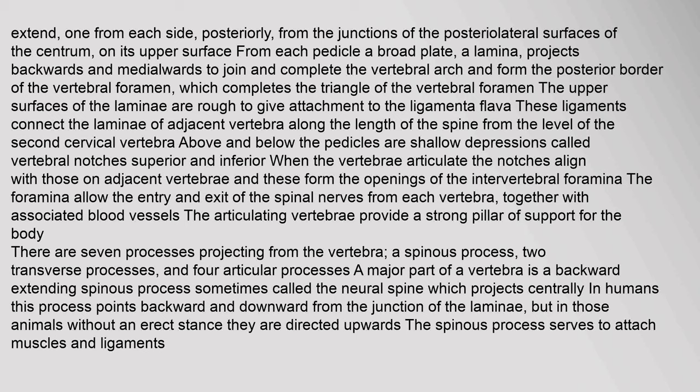The articulating vertebrae provide a strong pillar of support for the body. There are seven processes projecting from the vertebra: a spinous process, two transverse processes, and four articular processes. A major part of a vertebra is a backward-extending spinous process, sometimes called the neural spine, which projects centrally in humans. This process points backward and downward from the junction of the laminae, but in those animals without an erect stance they are directed upwards. The spinous process serves to attach muscles and ligaments.